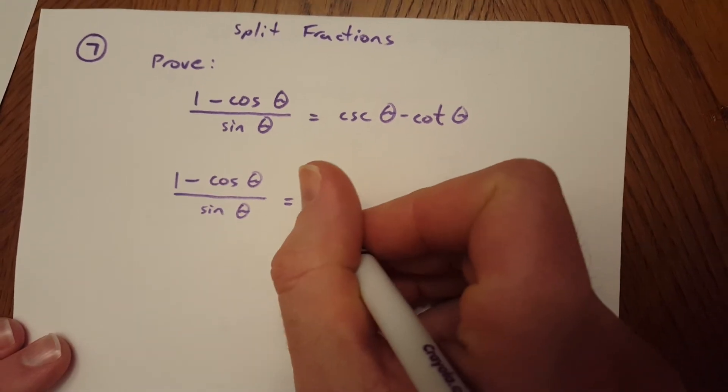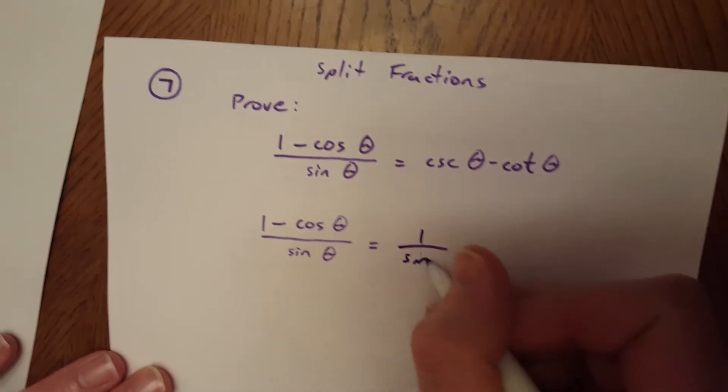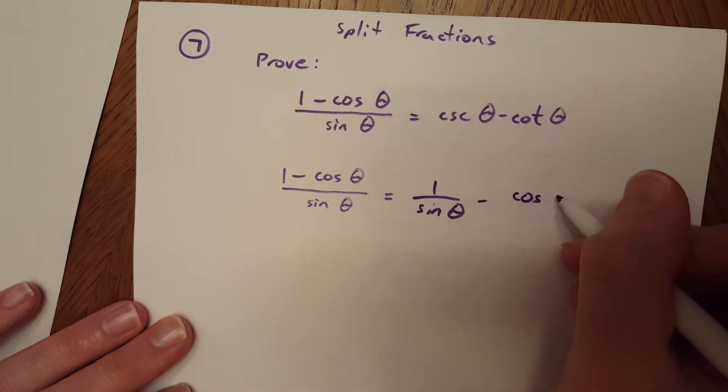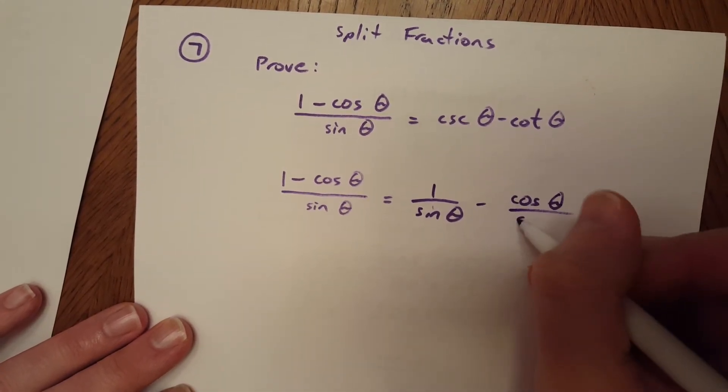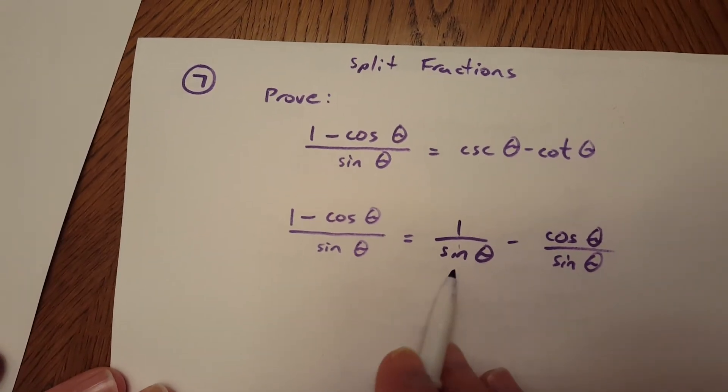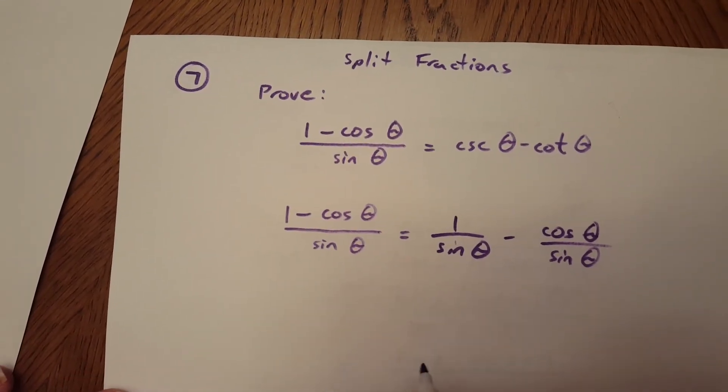I would have 1 over sine minus cosine over sine. So I'm splitting it up, putting the denominator—it's just going in the reverse of subtracting like we've done already.